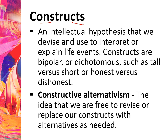Our constructs are bipolar or dichotomous, meaning we understand the opposite side of our beliefs in order for them to be useful. For example, we don't only know the meaning of 'tall' — we also know the meaning of 'short.' If we use the word 'honest,' we also know the meaning of 'dishonest.' So in every belief that we have, we know that it has an opposite.